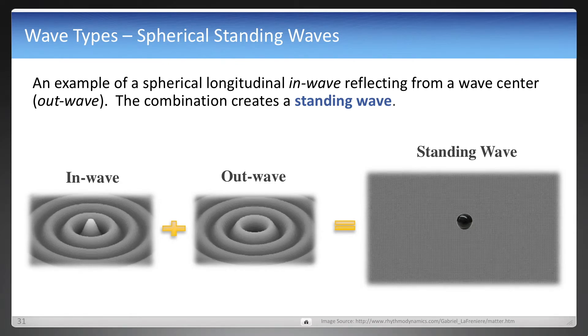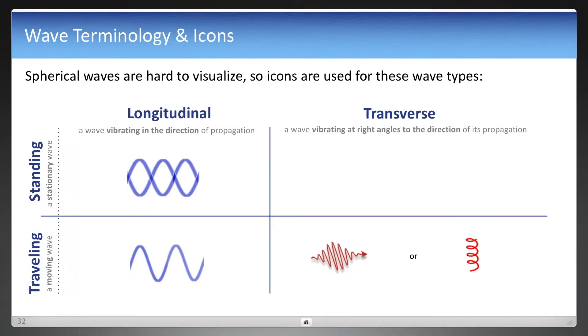But since they are so hard to visualize, icons are used throughout EWT and these videos. And the icons that you'll see, starting with the top left quadrant there, is an icon for the longitudinal standing wave.